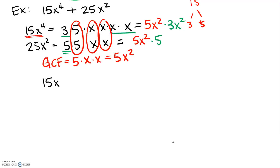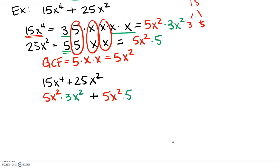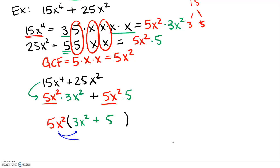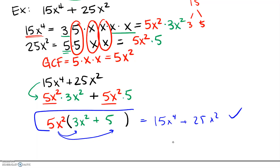So we can rewrite 15x to the fourth plus 25x squared as 5x squared times 3x squared, plus 5x squared times 5. All we've done is rewritten the original in a slightly expanded form. Now we can undistribute — that's what factoring is, the opposite of distribution. Since both terms share that GCF of 5x squared, we pull it out front and rewrite as 5x squared times the quantity 3x squared plus 5. To check, just distribute back out and confirm you get 15x to the fourth plus 25x squared.